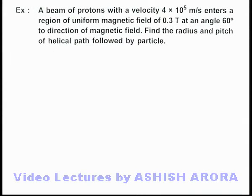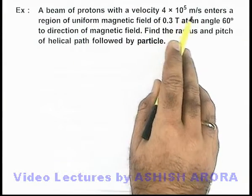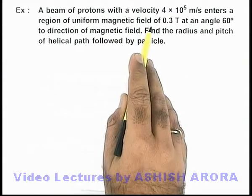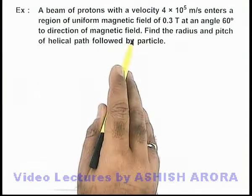In this example, we are given that a beam of protons with velocity 4 × 10⁵ meters per second enters a region of uniform magnetic field of 0.3 Tesla at an angle 60° to the direction of magnetic field.